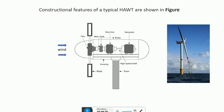This figure shows the constructional features of a typical horizontal axis wind turbine. This horizontal axis wind turbine consists of a hub, blades, main shaft, gearbox, generator, high-speed shaft, and tower. All these components are enclosed in a housing called the nacelle.